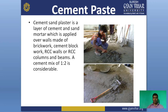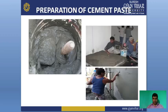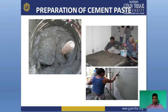Now how plaster is made: the material used is cement paste. Cement sand plaster is a layer of cement and sand mortar applied over walls made of brickwork, cement blockwork, RCC wall, or RCC column and beam. The proportion ratio is considerable for the plastering process. First we mix the cement paste with sand, then place it with the help of a tool, and then apply the cement paste on a wall for better smoothness and durability.